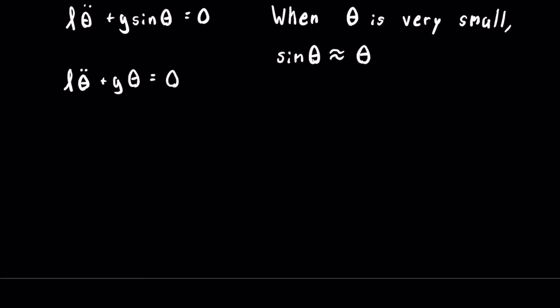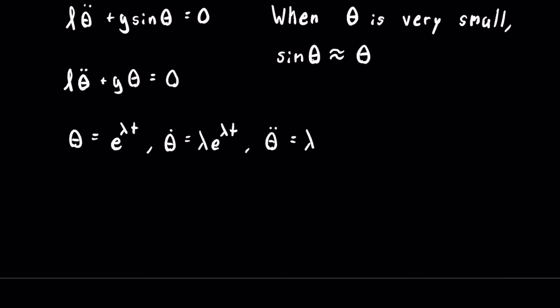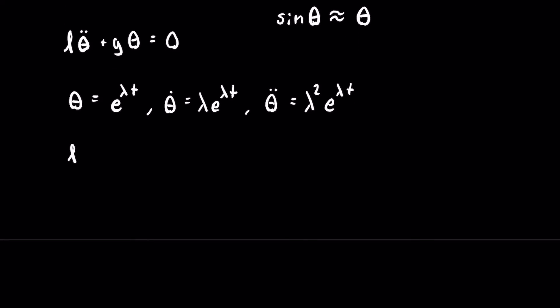If you haven't seen my last video on the mass-spring system I recommend you do so, because this is very similar and the differential equation can be solved in almost the same way. The first thing we do is assume that theta takes the form of e to the power of lambda t. This means theta dot is equal to lambda e to the lambda t, and theta double dot is equal to lambda squared e to the lambda t. Substituting back into our equation gives us l lambda squared e to the lambda t plus g e to the lambda t equals zero.